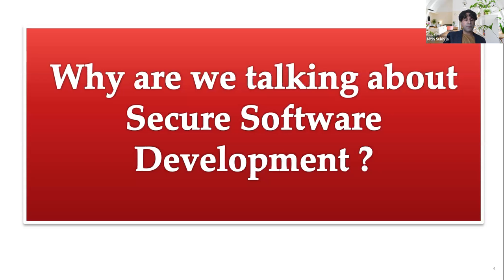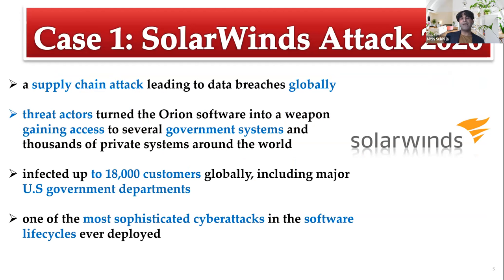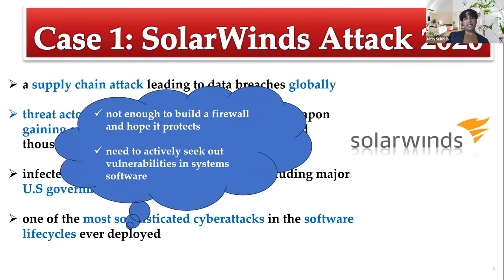Why are we talking about secure software development? Let's look at some major cases from the past three years. One of the most sophisticated cyber attacks in a software life cycle was the SolarWinds attack in 2020 — a supply chain attack leading to data breaches globally. Threat actors tried to turn the software into a weapon to gain access to major government systems, infecting more than 18,000 customers globally, including DOE, DOD, and Homeland Security.